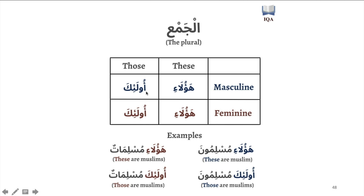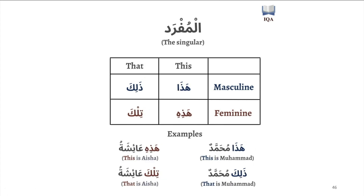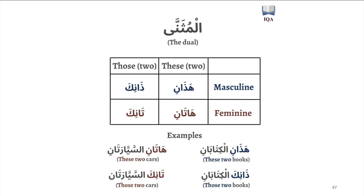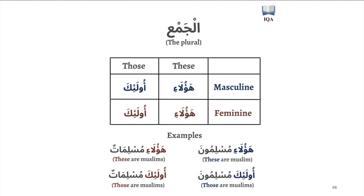So unlike the previous two — the muthanna and the mufrad — where we had to differentiate between the masculine and the feminine: hadha, hadhihi, hadhaani, hadhaani, and so on, for the plural we don't have to at all. So we say: ha'ulai muslimun — these are Muslim men. Ha'ulai muslimat — these are Muslim women. Ula'ika muslimun. Ula'ika muslimat. There's no differentiating between masculine and feminine. Use ha'ulai for both and ula'ika for both.